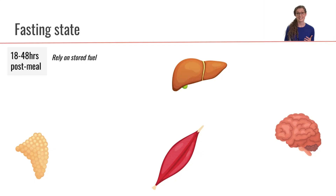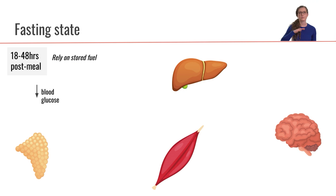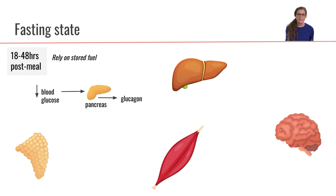Now let's move on to the fasting state. The fasting state is 18 to 48 hours post-meal. We're still going to be relying on stored fuel, but some of our storage sources have been used up by this point. Our blood glucose concentration has dipped, and this decrease in blood glucose concentration is going to stimulate alpha cells of the pancreas to secrete glucagon.